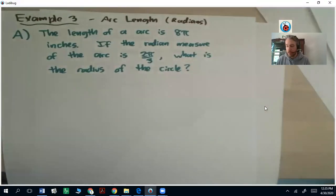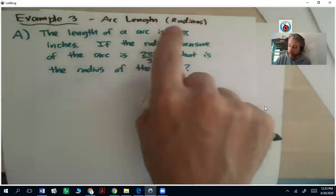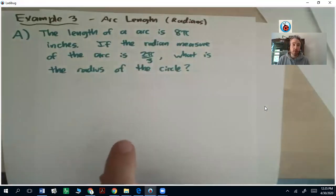Alright, the last example for this lesson is going to be involving arc length and radians using the formula we just had in the previous video.